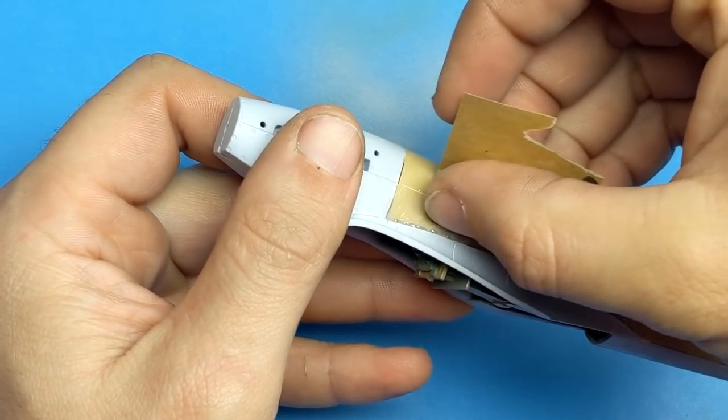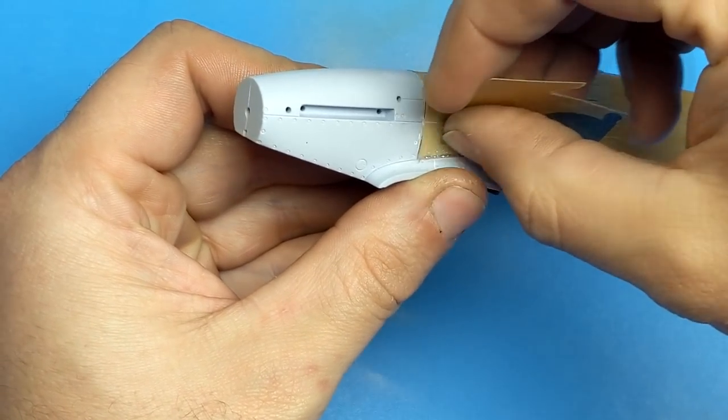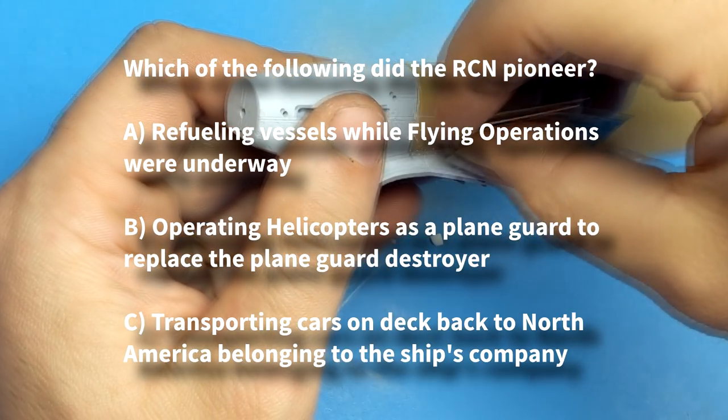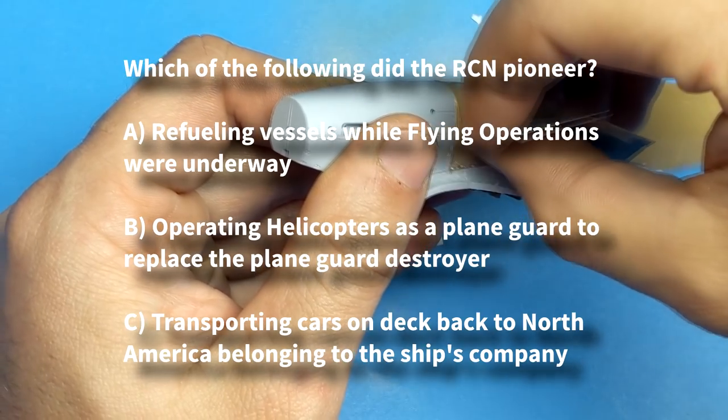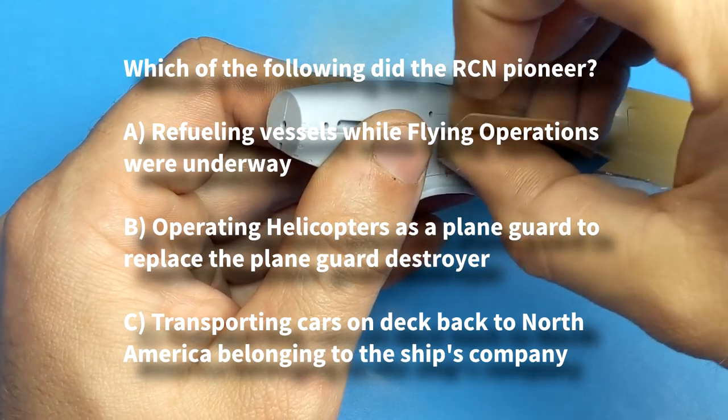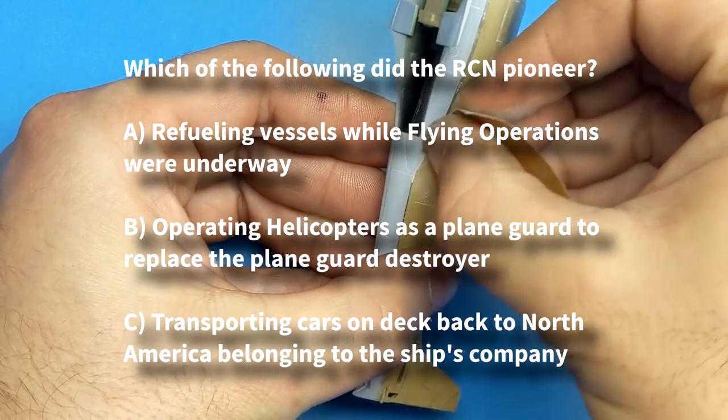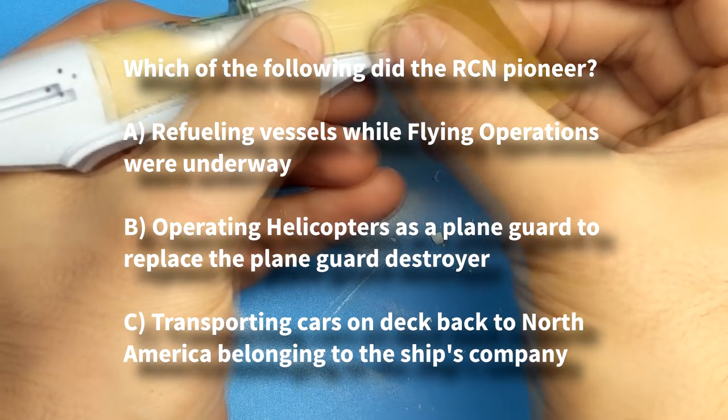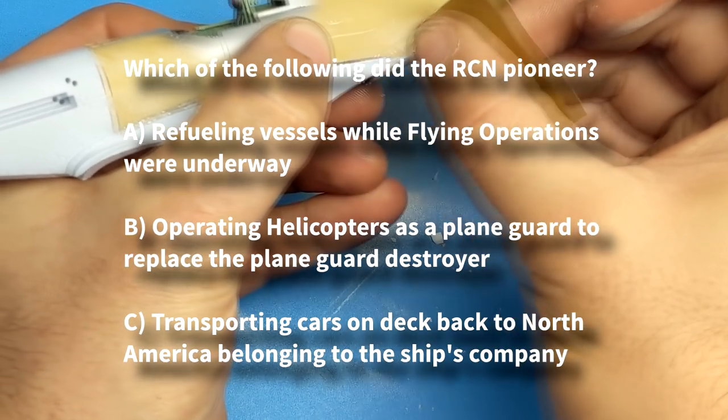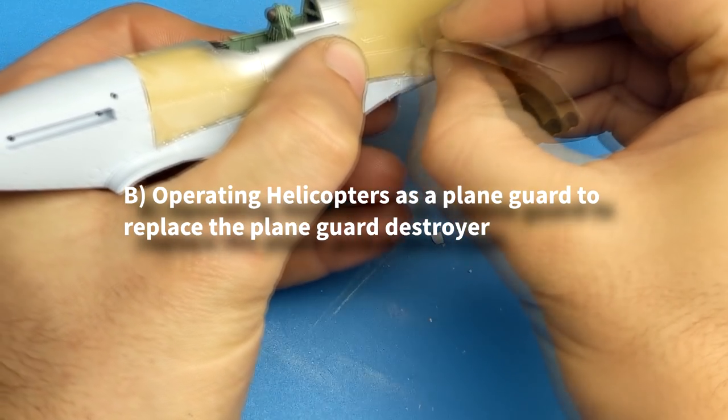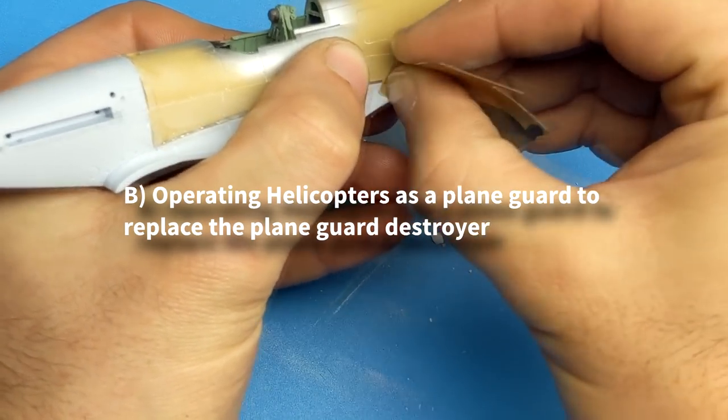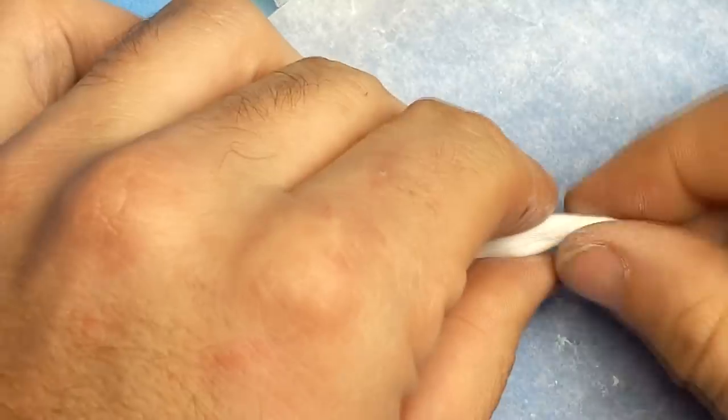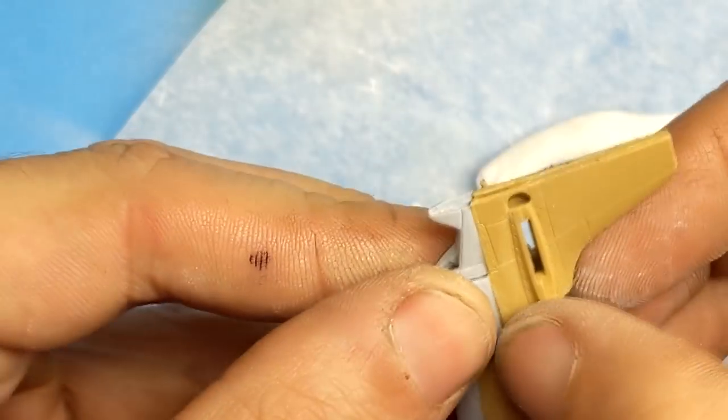So while we're sitting here watching me sand plastic with paper and not try to set it on fire, let's play a little Canadian trivia game. Question 1. Which of the following did the Royal Canadian Navy pioneer? Is it A. Refueling vessels while flying operations were underway. B. Operating helicopters as a plane guard to replace the plane guard destroyer. Or C. Transporting cars on deck back to North America belonging to the ship's company. And the correct answer for that one is going to be B. Operating helicopters as a plane guard to replace the plane guard destroyer. It should also be noted that the Canadian Navy pioneered operating helicopters off of destroyers and frigates as part of an anti-submarine warfare tactic.